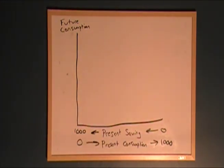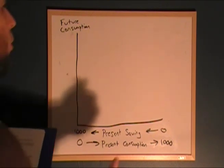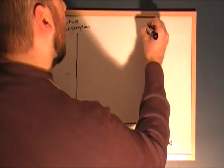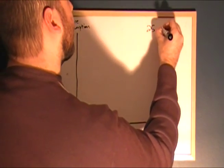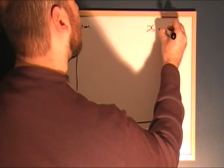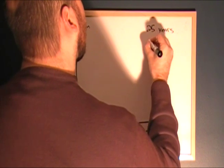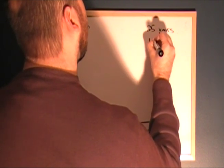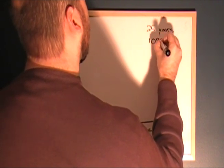Now there are two other things we need to know: the interest rate I can receive and the number of years I'm putting it away for. For our example, we're going to put our money away for 25 years and we're going to take a look at a 10% interest rate.